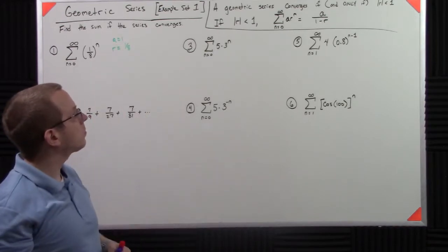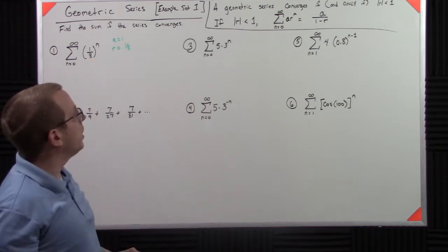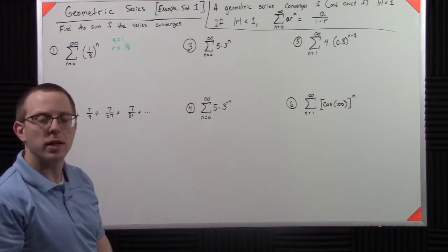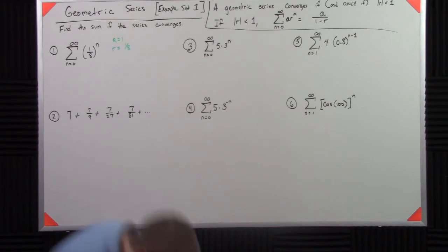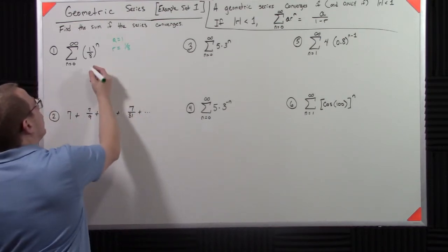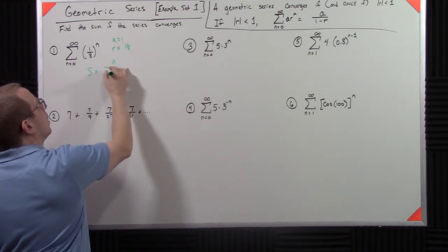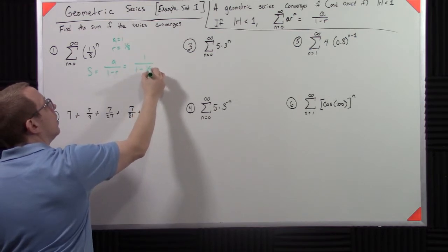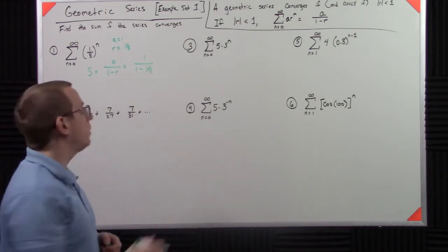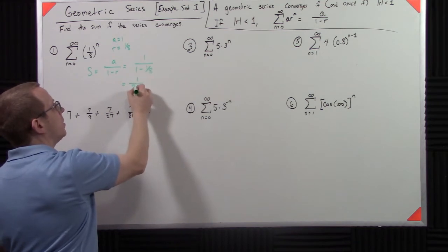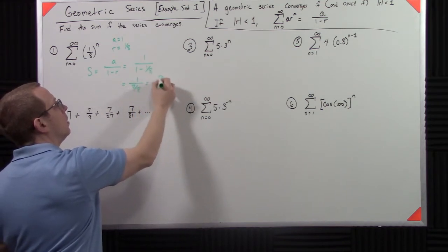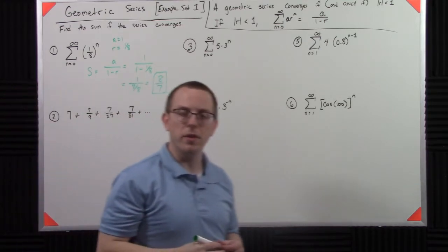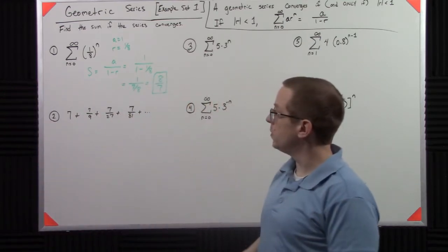And r is 1/8, because that's r to the n. So then what I need to do is plug it into my formula. 1 over 1 minus 1/8, so that is 1 over 7/8 or 8/7. Simple enough, right?